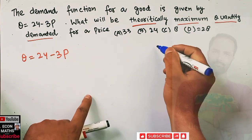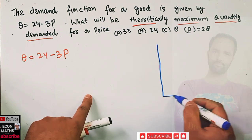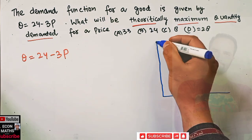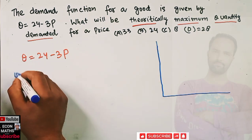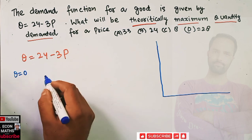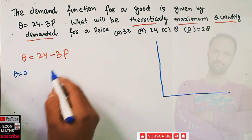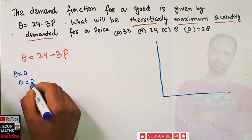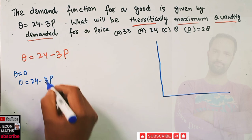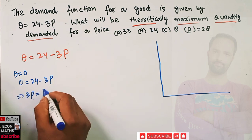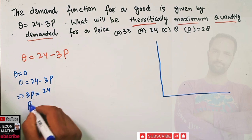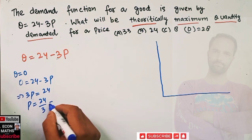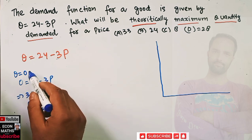To draw the graph of this linear demand function, we need two points. First, we put q = 0 in this equation. When we put q = 0, we have 0 = 24 minus 3p, which implies 3p = 24.